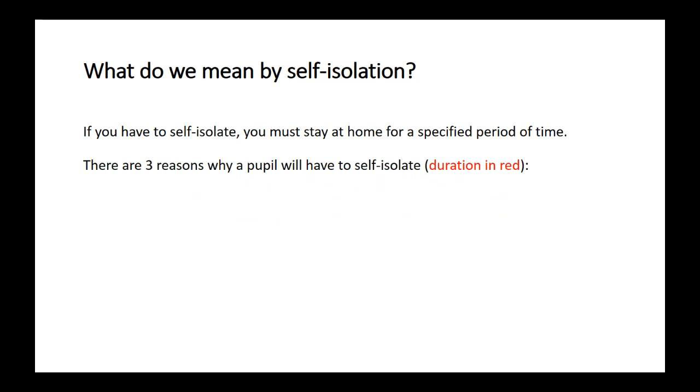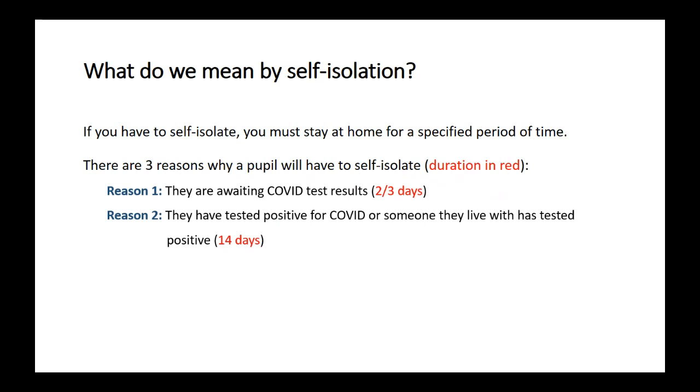There are three reasons why your pupil would have to self-isolate. The first is if you've shown symptoms of COVID and are awaiting test results. Typically that would be for two or three days—you'd have to stay at home till the test results are received. The second reason is if you have tested positive for COVID, or someone you live with has tested positive.